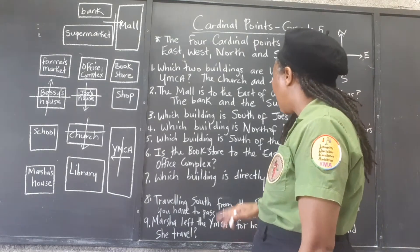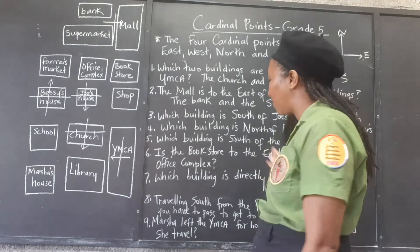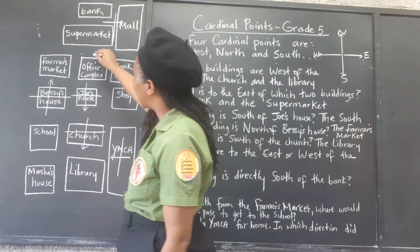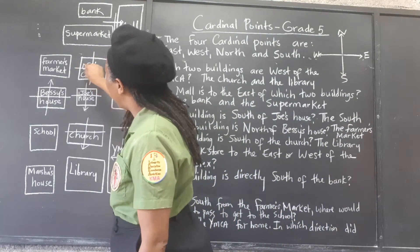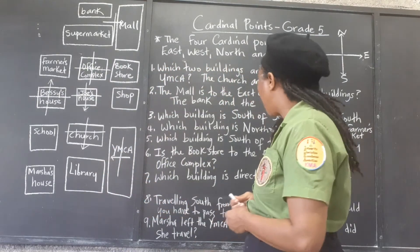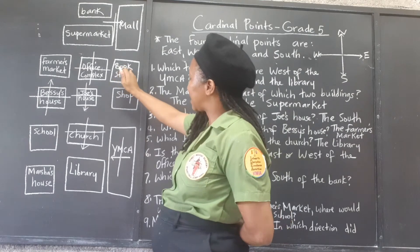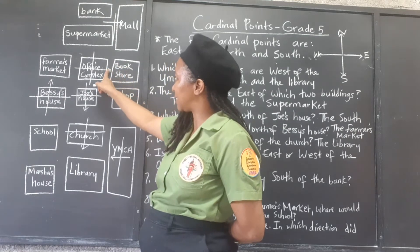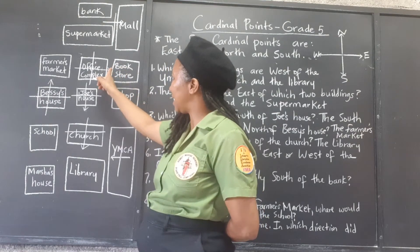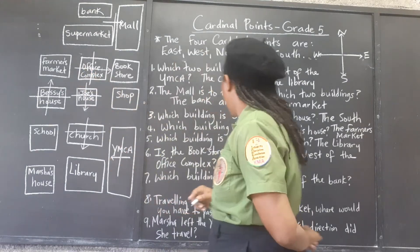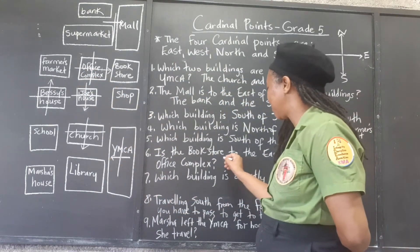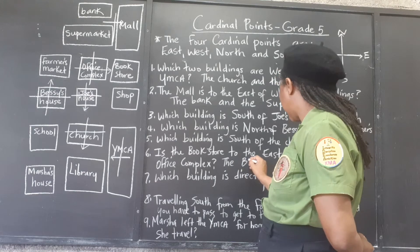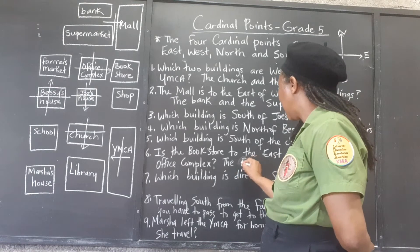Number six: the bookstore is to the east or west of the office complex? The office complex is our point of reference — that's where we put it. We're talking about the bookstore — so what direction is it? The bookstore is to the east of the office complex.